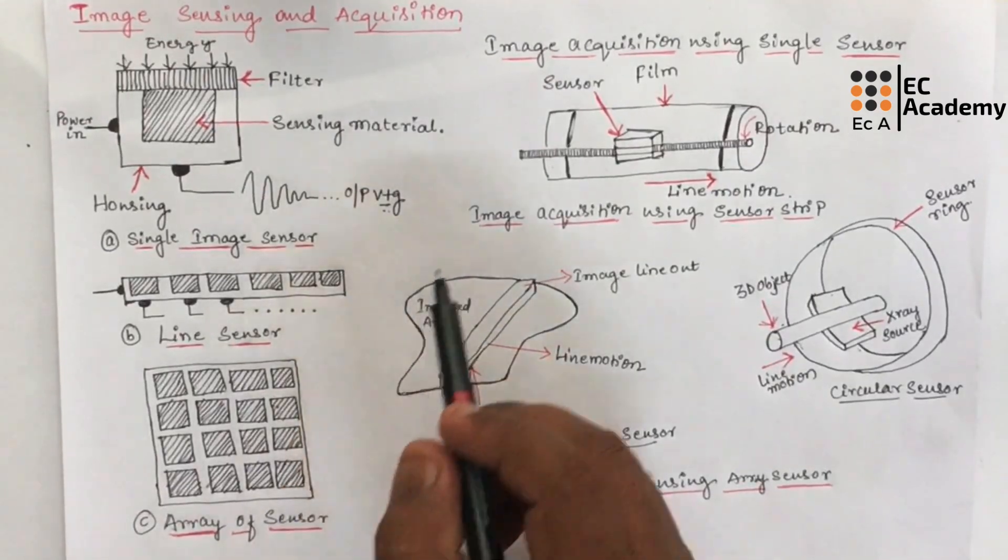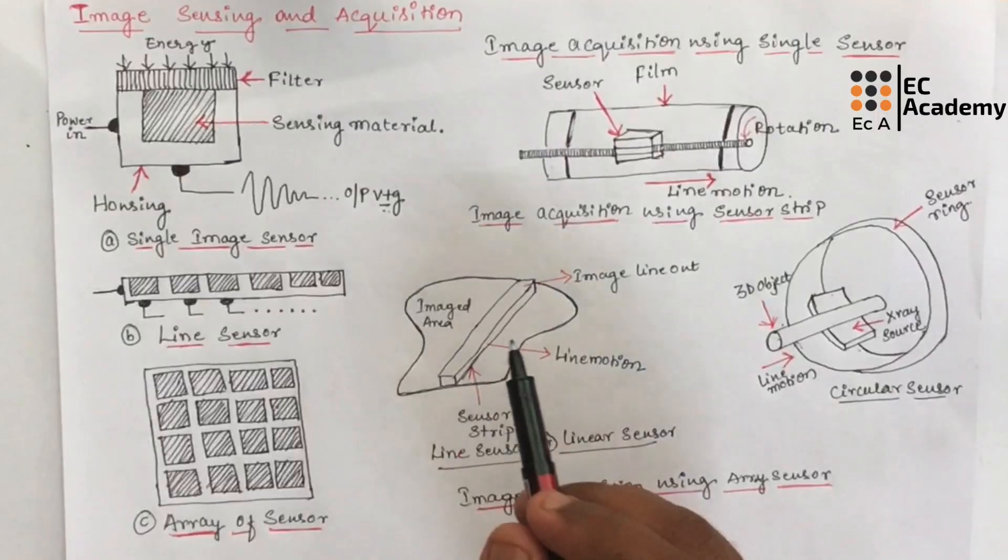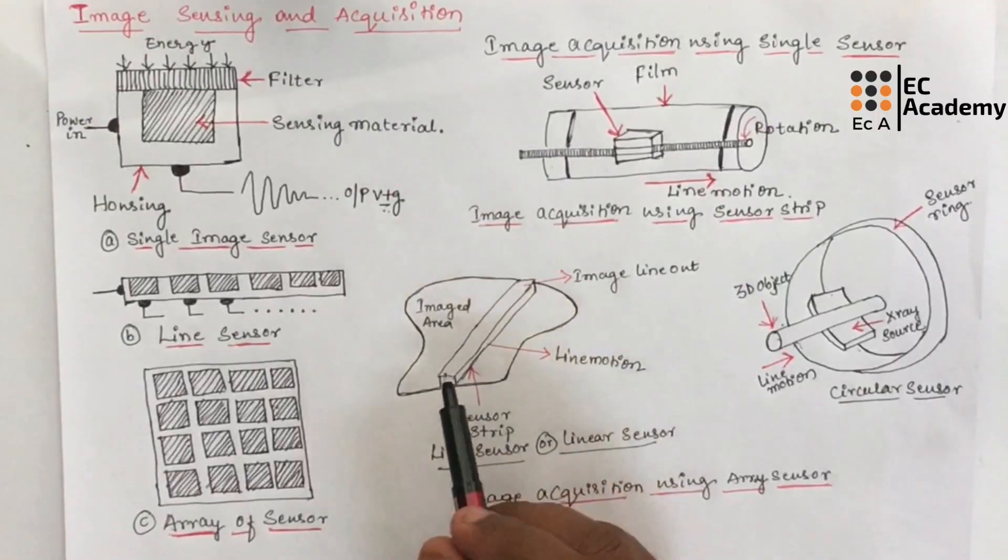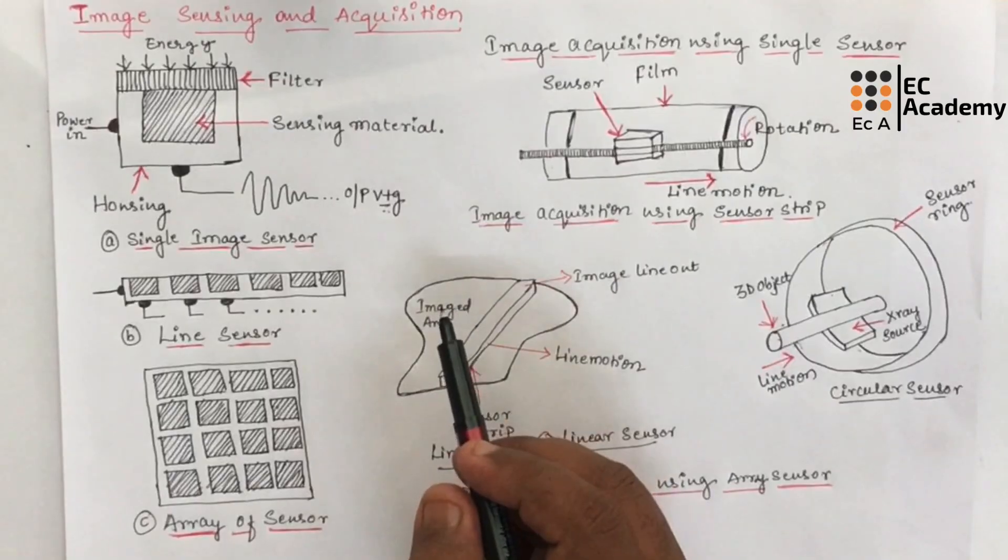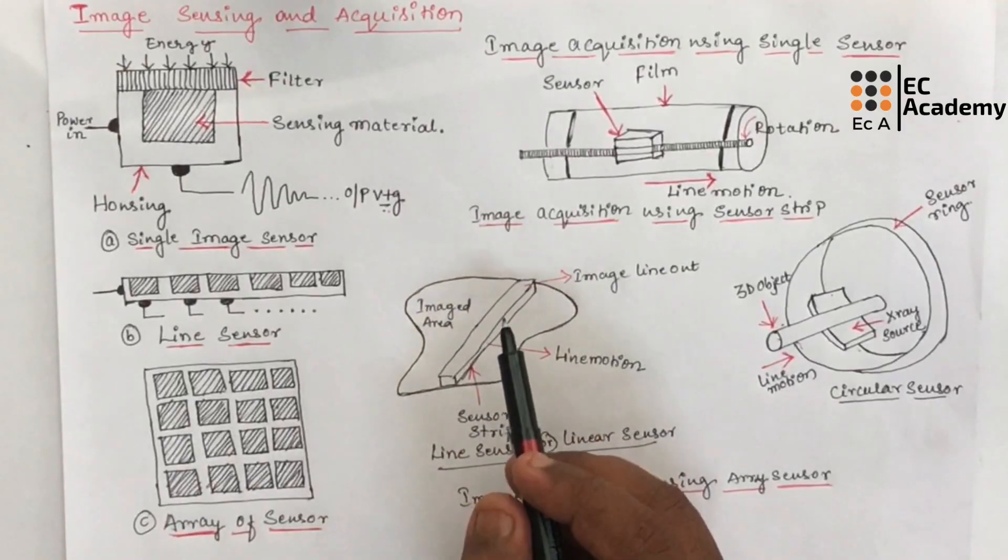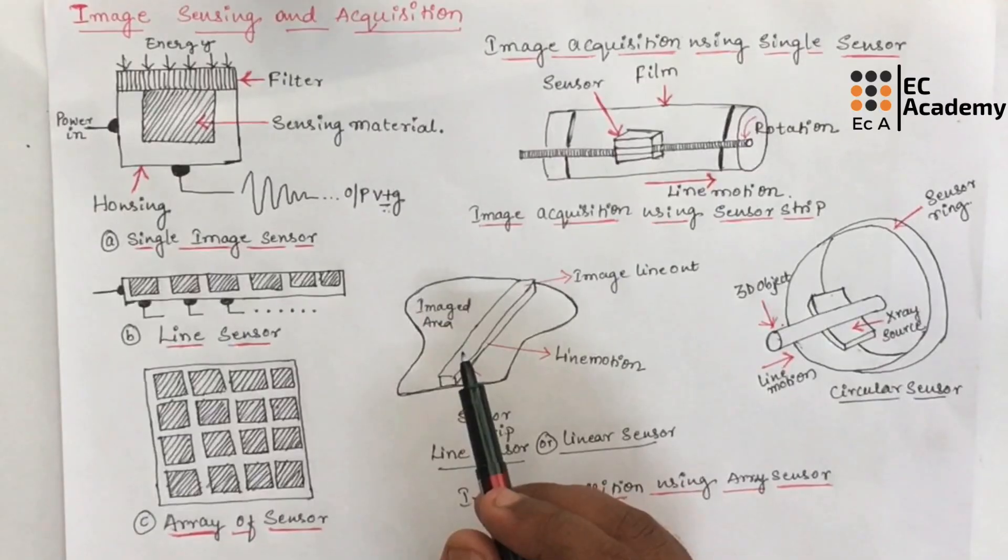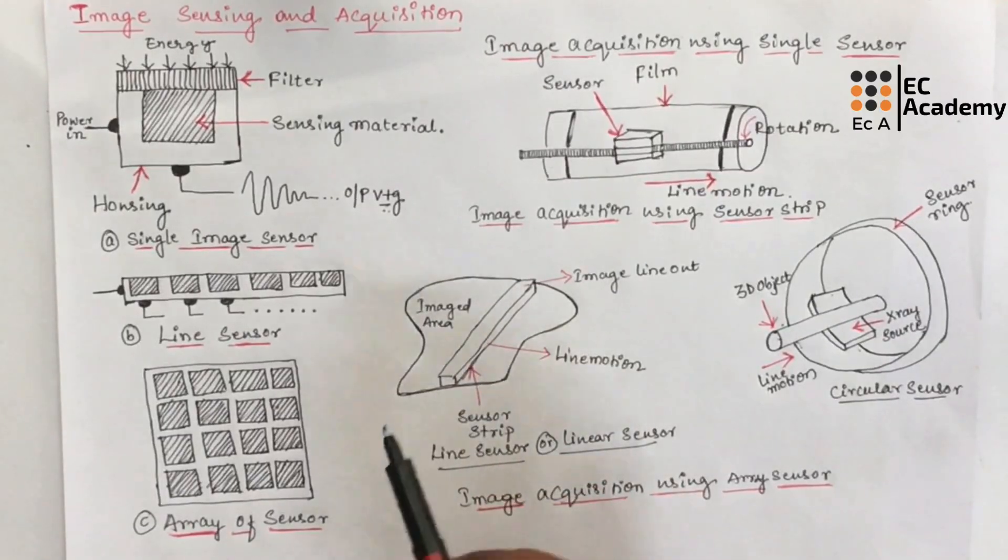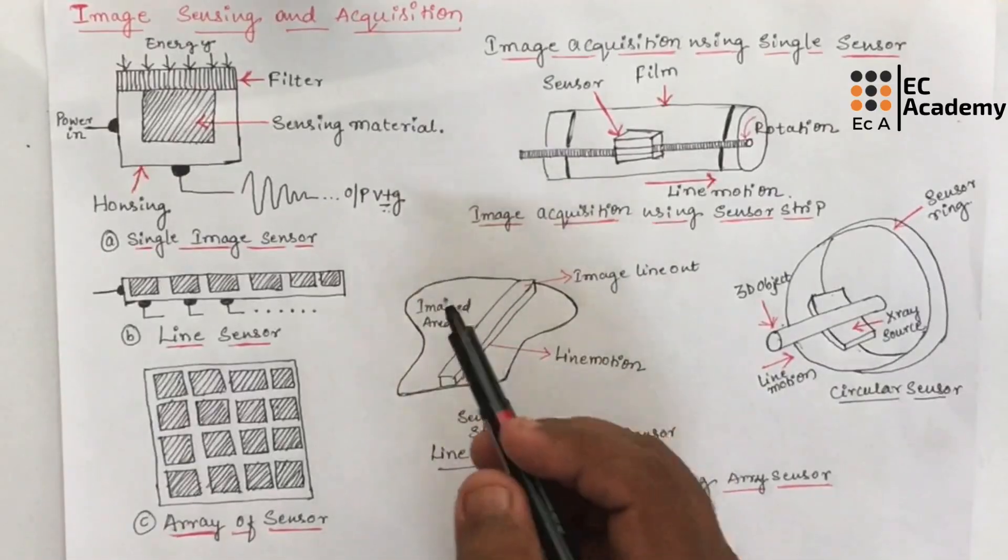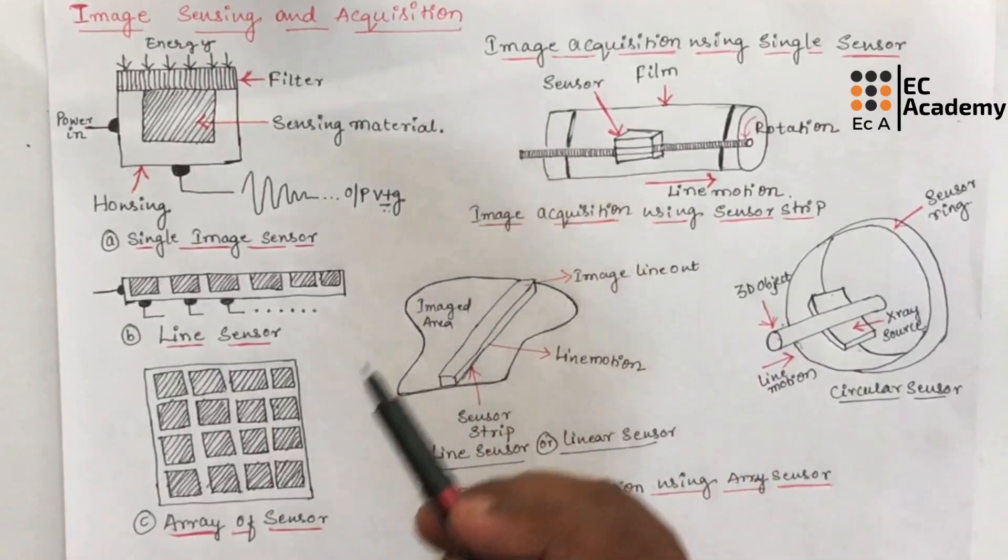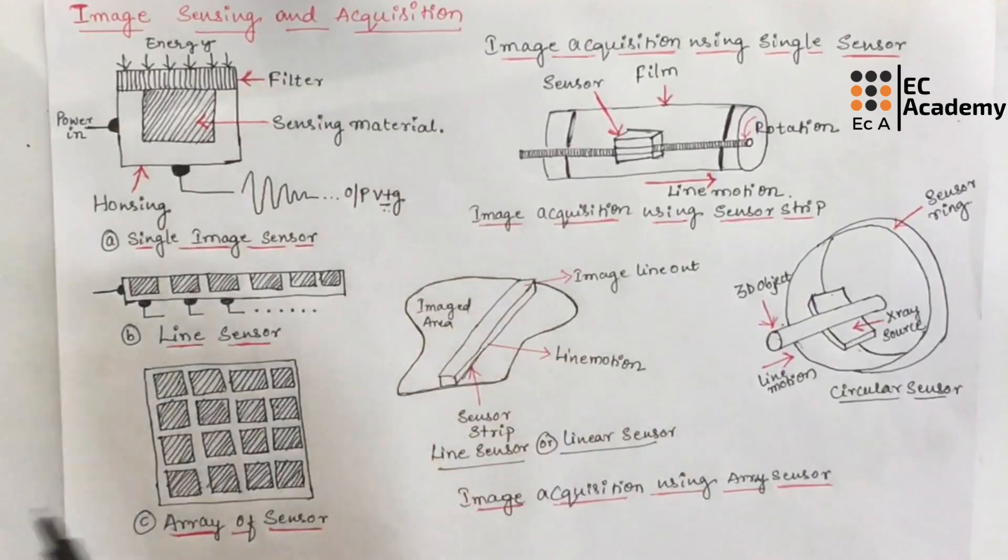For example, the illumination can originate from a source of electromagnetic energy such as radar, infrared, or X-ray. The illumination can also originate from the source such as ultrasound or even a computer generated illumination pattern. Depending upon the nature of the source, the illumination energy is reflected or transmitted through the object.